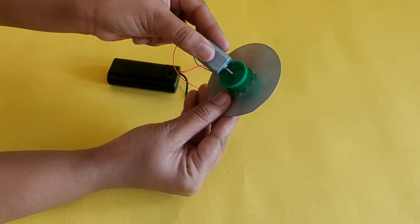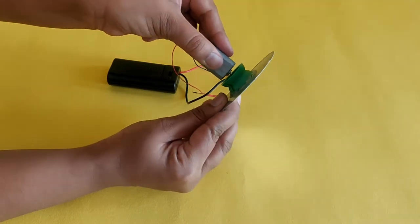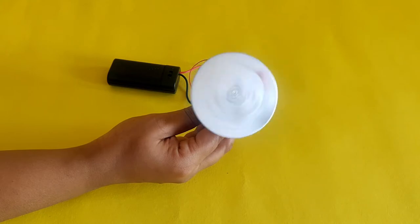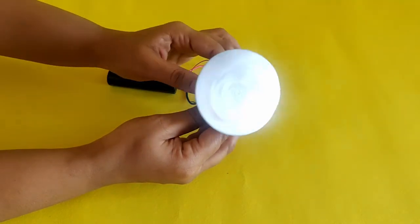Attach the aluminium disc to the axle of the toy motor. Turning on the switch on the battery cell holder will cause the aluminium disc to spin.